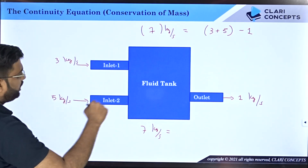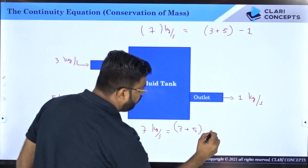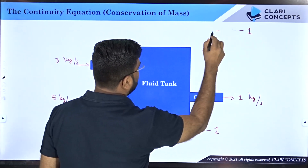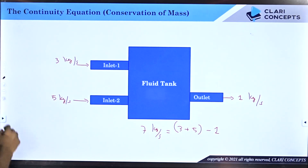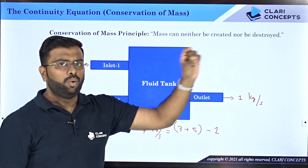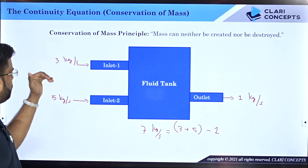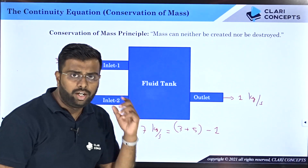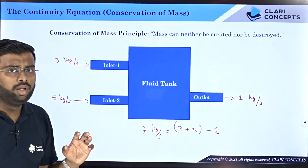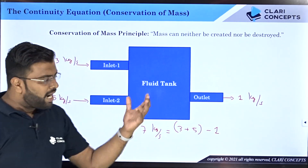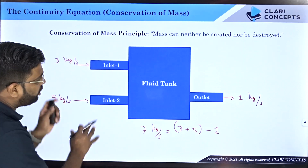You answered this by keeping one fundamental rule in mind. You added the inlets — 3 plus 5 — and subtracted the outlet. That rule is the conservation of mass: mass can neither be created nor destroyed. Because if 3 plus 5 is 8 and outgoing is 1, then straight away 7 is the difference and 7 should be the mass preserved in this tank. So mass is a conserved quantity, and now let us derive the expression for any general fluid flow.